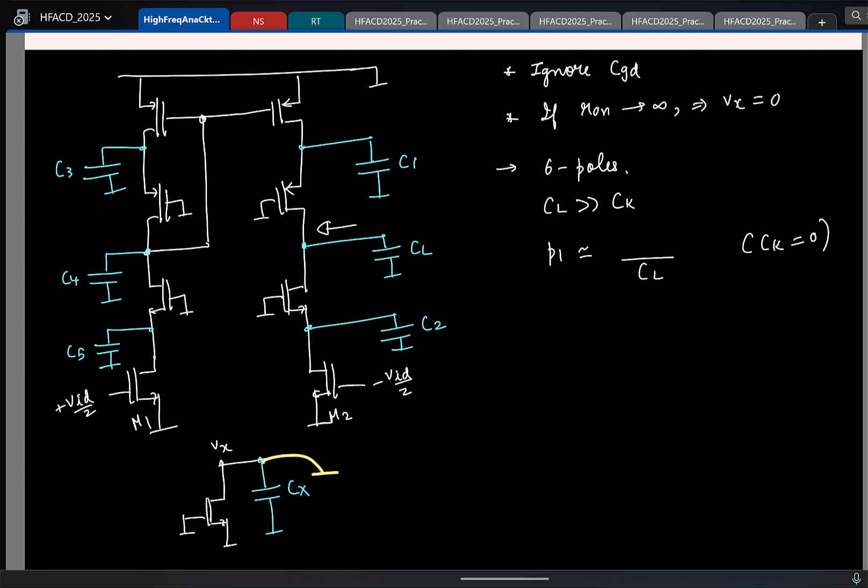What is the resistance looking here? Yeah, it is the cascode of this fellow parallel with cascode of this. So I am not writing the full expression. I will say it is the output conductance by the load capacitors.